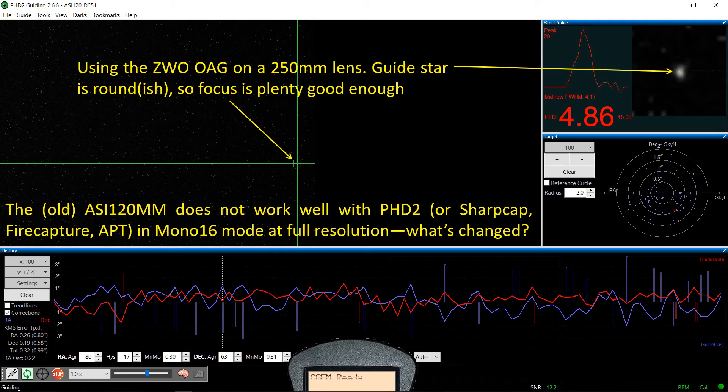Now when I attach the off-axis guider to a 250mm lens, it's a video that I'll be doing shortly talking about that system, the guide stars except for some little movement that you get with guide stars is basically circular and it worked just fine.